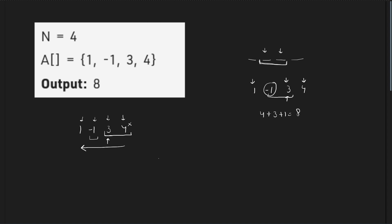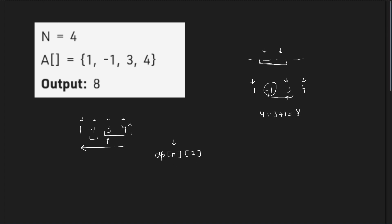Obviously, we will have a dp of size n. At each index, there are two possible things: either I have taken the previous element or I have not taken the previous element. So I will have to form a dp of size n cross 2, because at each index, I will have two possibilities to reach the current index.